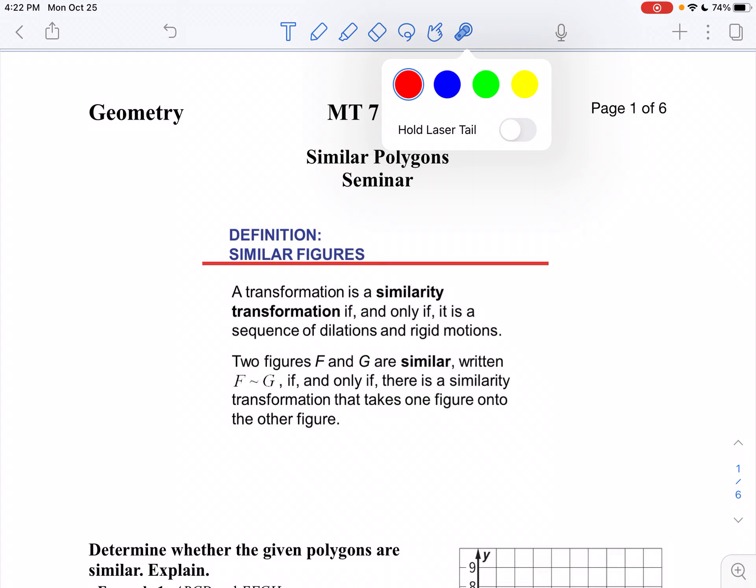If we look at our first problem here, a definition of similar shapes is a similarity transformation. If and only if, it's a sequence of dilations and rigid motions, like rigid motions being reflection, rotation, translation.